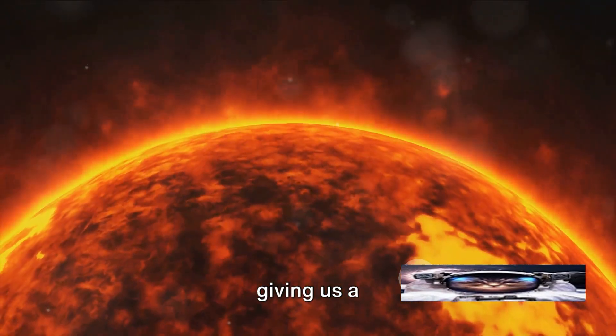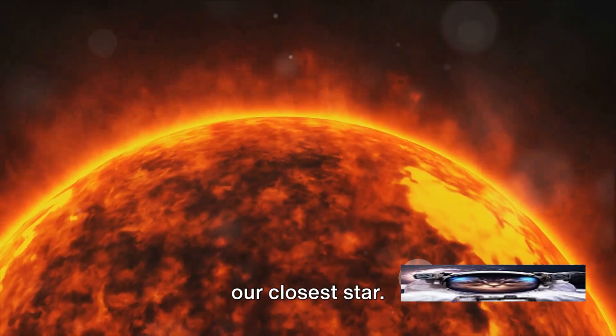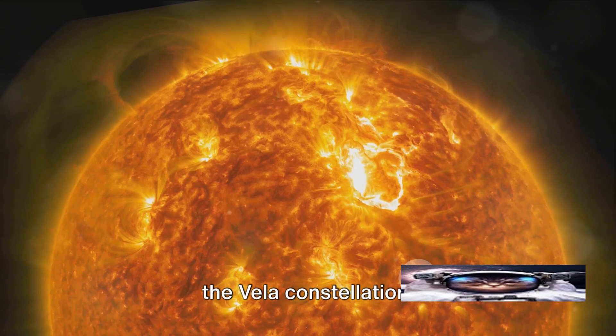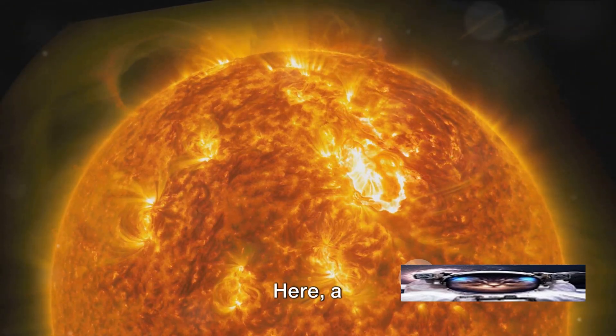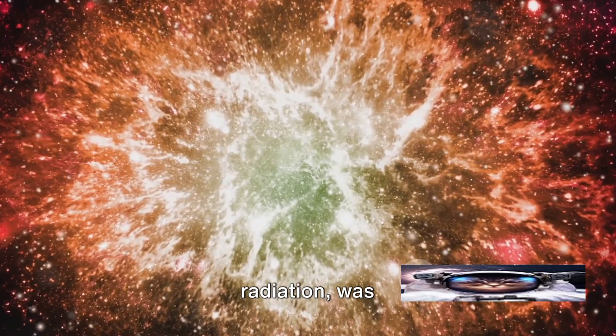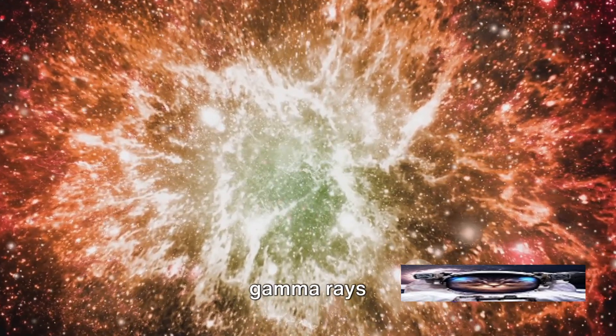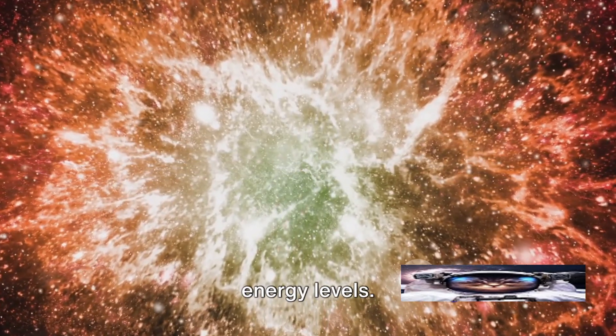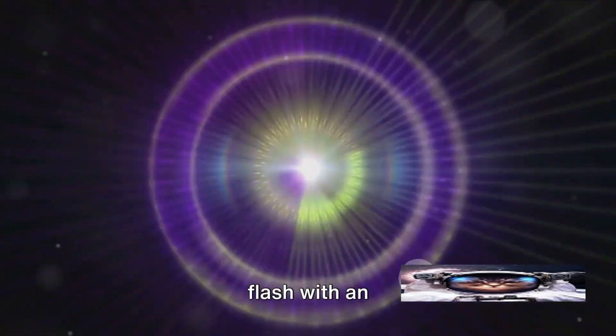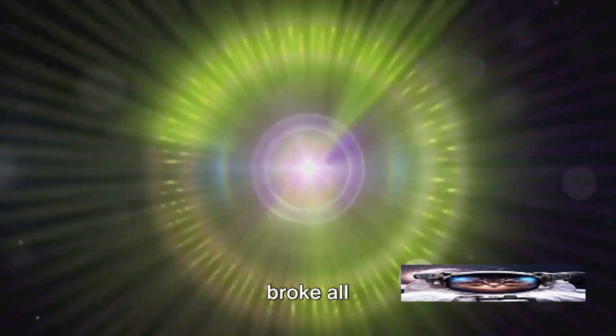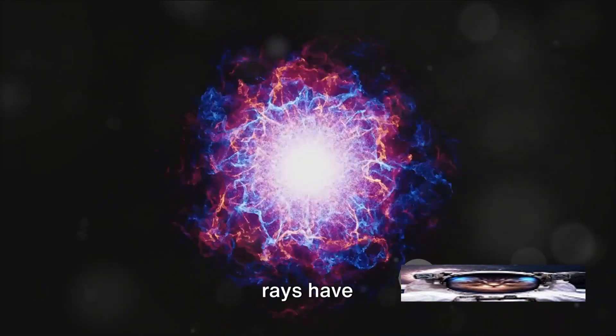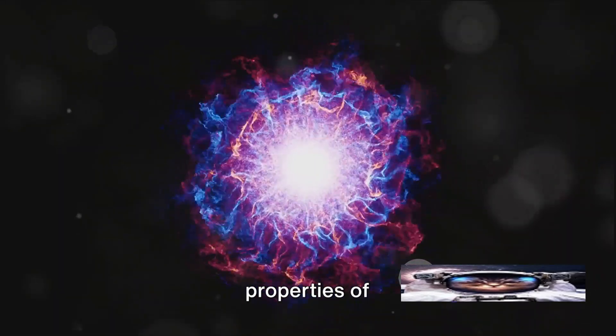Next we journey to the remnants of a supernova in the Vela constellation. Here a pulsar, a neutron star that emits beams of radiation, was found to emit gamma rays surpassing previous energy levels. This pulsar, a celestial lighthouse, was seen to flash with an intensity that broke all previous records. The energy and frequency of these gamma rays have given us a unique opportunity to study the properties of these extreme objects in unprecedented detail.